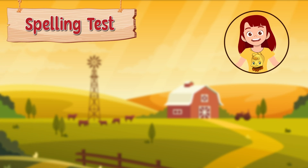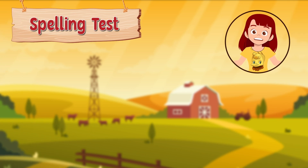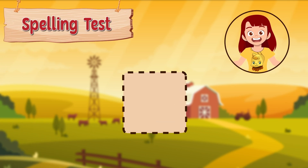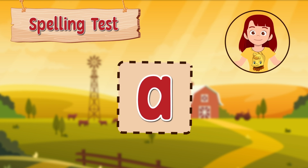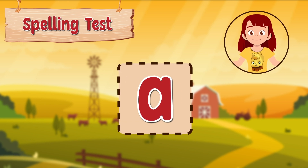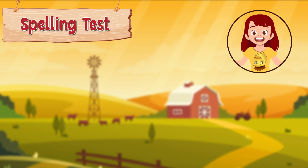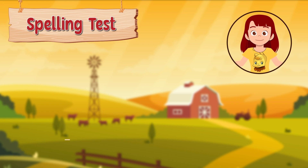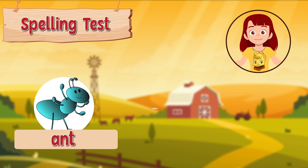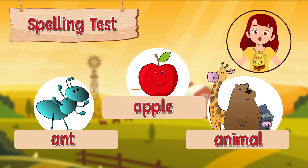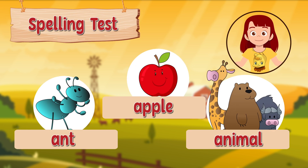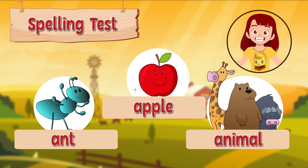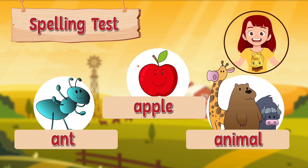For today's video, we're going to practice spelling words starting with the letter A. These are the words that we'll be spelling today: Ant, Apple, and Animal. Let's look at each word on their own, shall we?